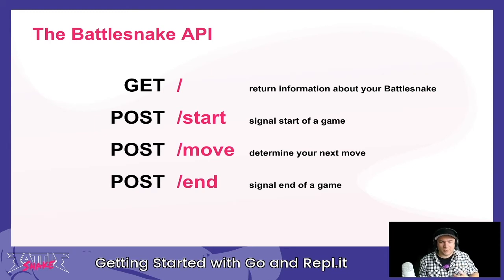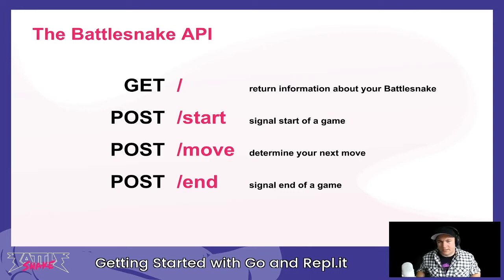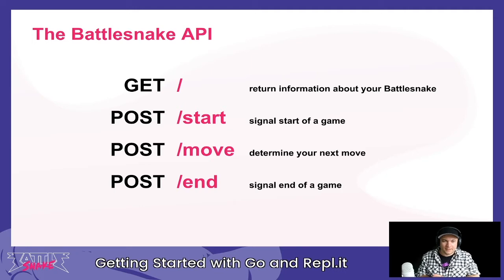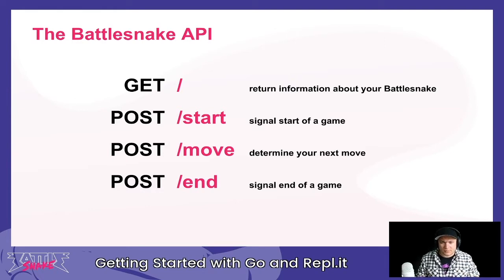The second command is POST /move — this is where the majority of your BattleSnake logic lives. Your snake looks at the current game board, makes a decision on what direction to move next based on where it is, where other BattleSnakes are, and where the food is, then returns that decision. This is called once for every turn of every game. We also send POST /end when the game concludes, so you can see how you were eliminated or deallocate resources.